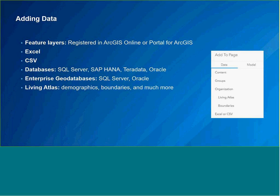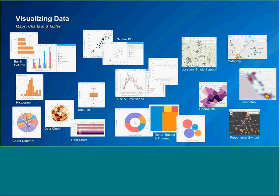In terms of adding data, you can bring in many different data sets from many different sources all at once in a single workbook. Examples include feature layers stored in your portal — whether ArcGIS Online or ArcGIS Enterprise — Excel or CSV files, data from relational databases, and enterprise geodatabases powered by SQL Server or Oracle. You can also bring in data from the Living Atlas, such as demographic data and boundaries like zip codes, counties, and states. There's much more available in the Living Atlas, so explore what's there and mash it up with your own data.